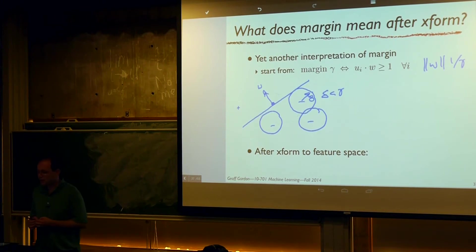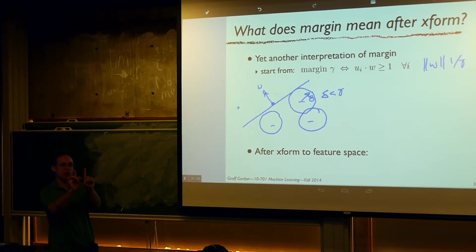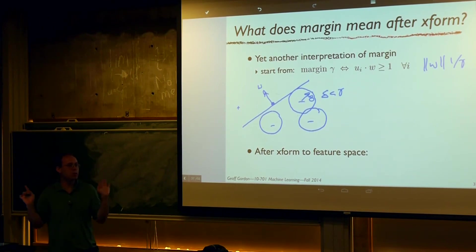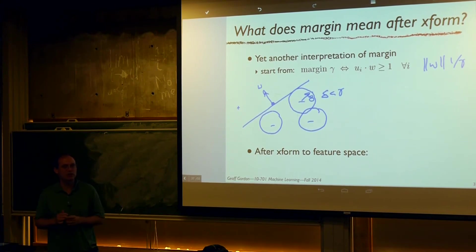Going back to the bin-based representation, this robustness property doesn't hold. If two examples are arbitrarily close together in original space, one has one bin turned on and the other has a different bin turned on — their distance in feature space is always sqrt(2), regardless of how close they are. So small changes in the example don't cause small changes in the features, and we get bad generalization.